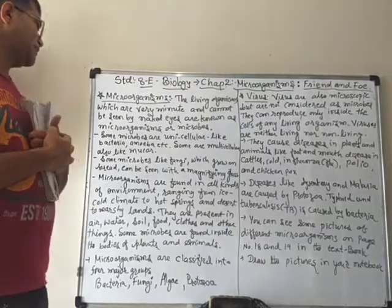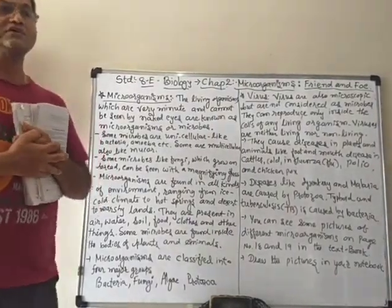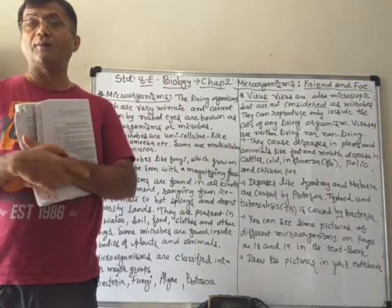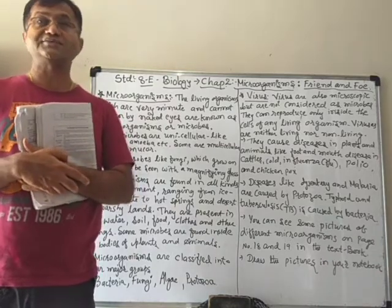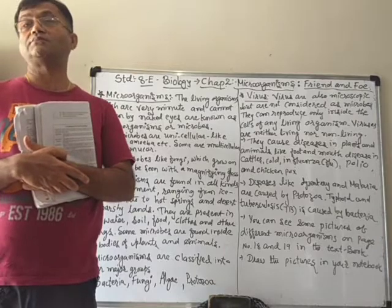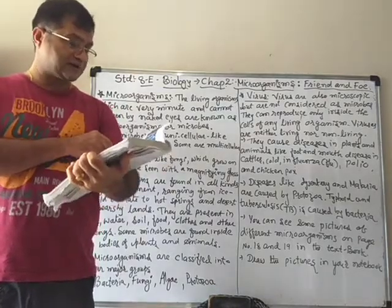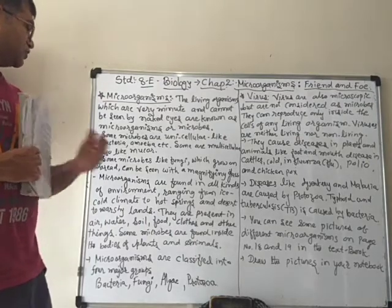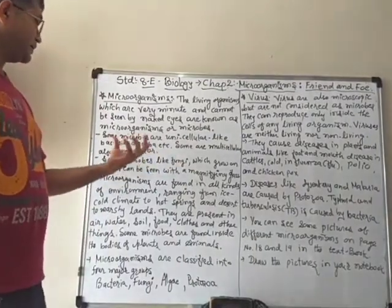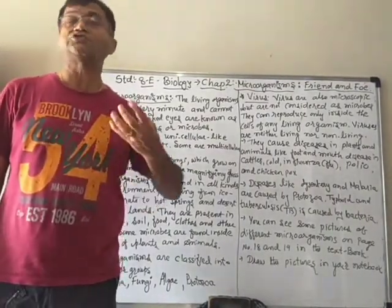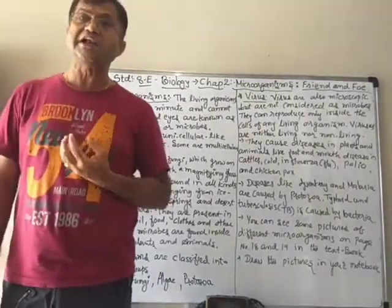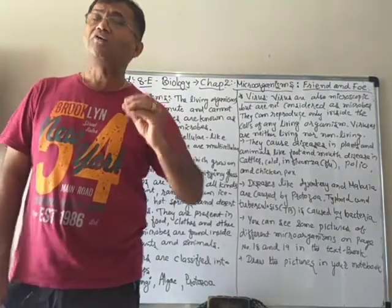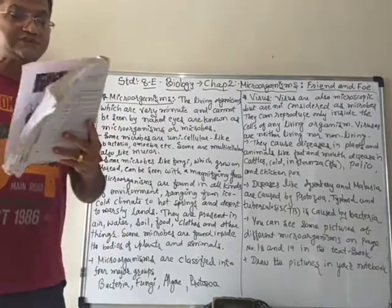Now, some of the micro-organisms are unicellular — unicellular means their body is made up of only a single cell — like bacteria, amoeba, paramecium, chlamydomonas, etc. Those are unicellular or single-celled organisms. And some are multicellular, like mucor, which is also one type of micro-organism. They are multicellular, means they have a well-designed body also, but they are also so small that it is not possible to see them directly.